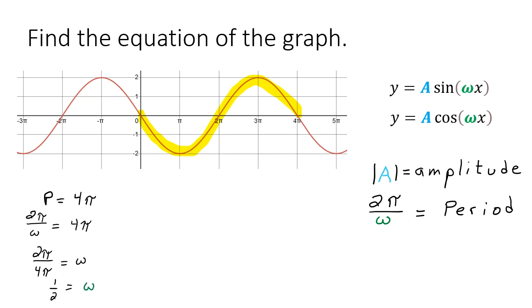All right so now we need to determine the amplitude and remember the absolute value of a is the amplitude so our a value may be positive or negative but our amplitude here looks like it's going from two to negative two. So the amplitude is half of that. That's your a value. All right so a is two.